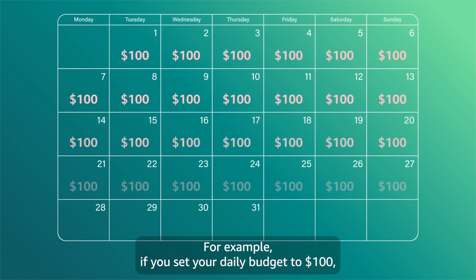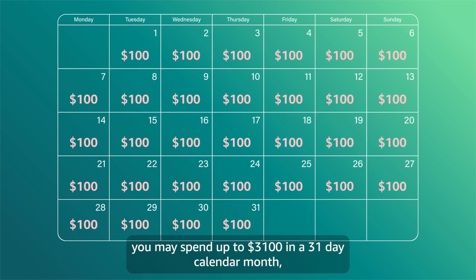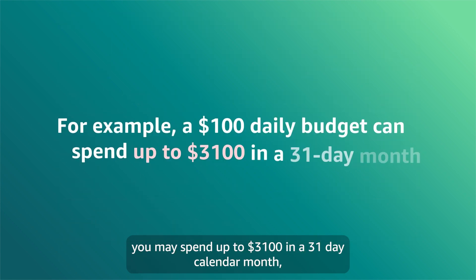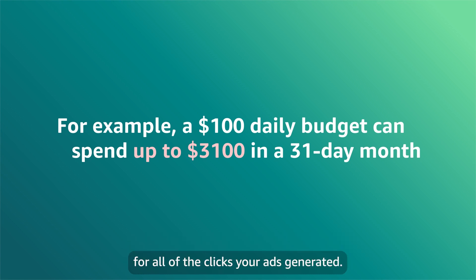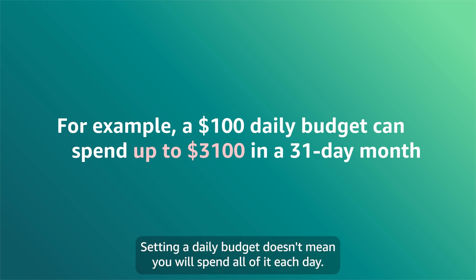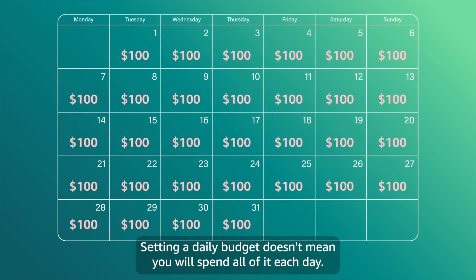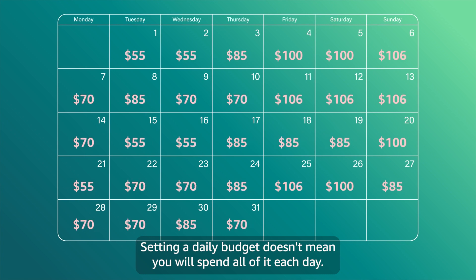For example, if you set your daily budget to $100, you may spend up to $3,100 in a 31-day calendar month for all of the clicks your ads generated. Setting a daily budget doesn't mean you will spend all of it each day.